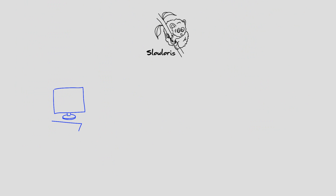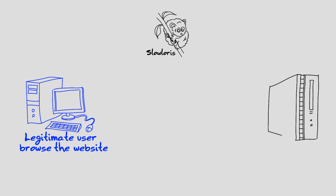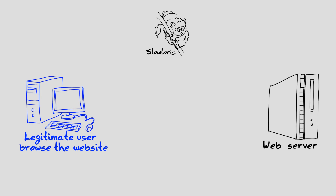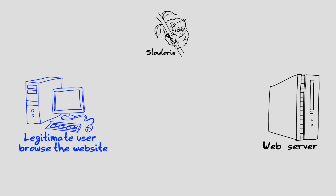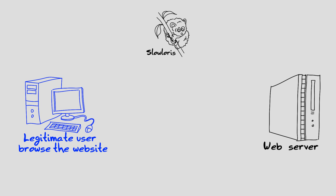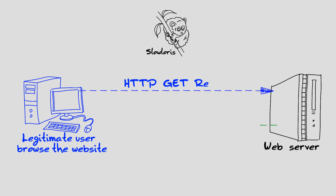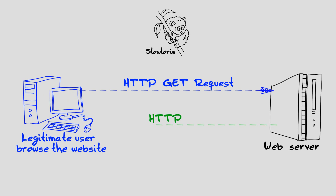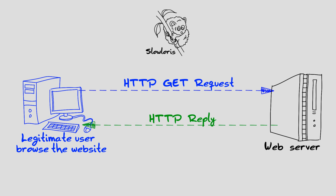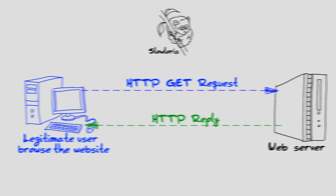The Slow Loris attack tool exploits a weakness in the HTTP protocol, requiring every HTTP request to be terminated by a sequence of newline characters. A legitimate HTTP GET request is normally contained in one packet, and is terminated quickly by the sequence of newlines at the end of the message.